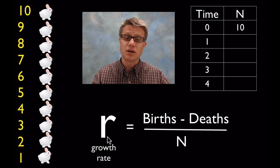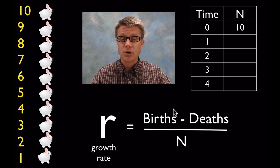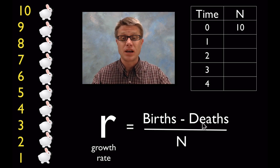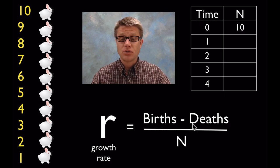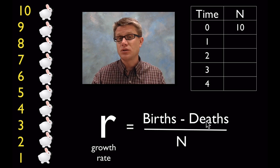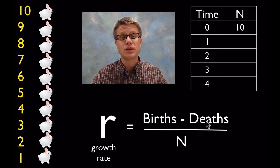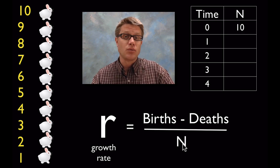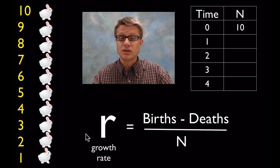And there's really only two things that are going to change that population. We're going to have new rabbits. That's going to be births. And then we're going to have dead rabbits. And that's going to be deaths. And so those two things are going to contribute to the change in the population. But it's a per capita. In other words we have to divide by the n, which is going to be the original population size.